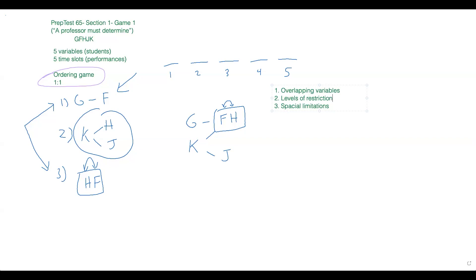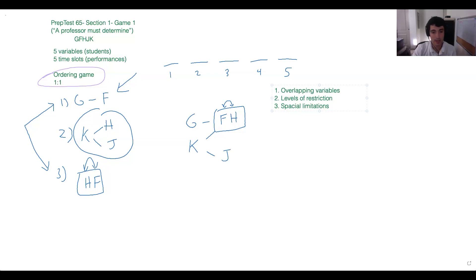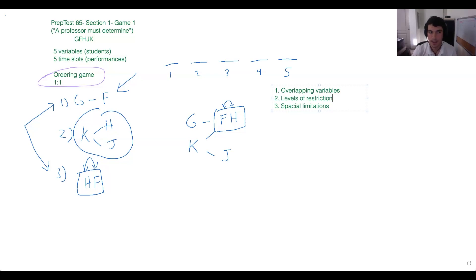Sometimes you can really narrow down where something must go — sometimes you can even narrow it down to: this element has to go here because it can't go anywhere else, or it can only be first or second. That ties into spatial limitations too, especially on a sequencing game. Lola in the chat says it helps us know where they can and cannot go — exactly, we're thinking about it in terms of spatial limitations.